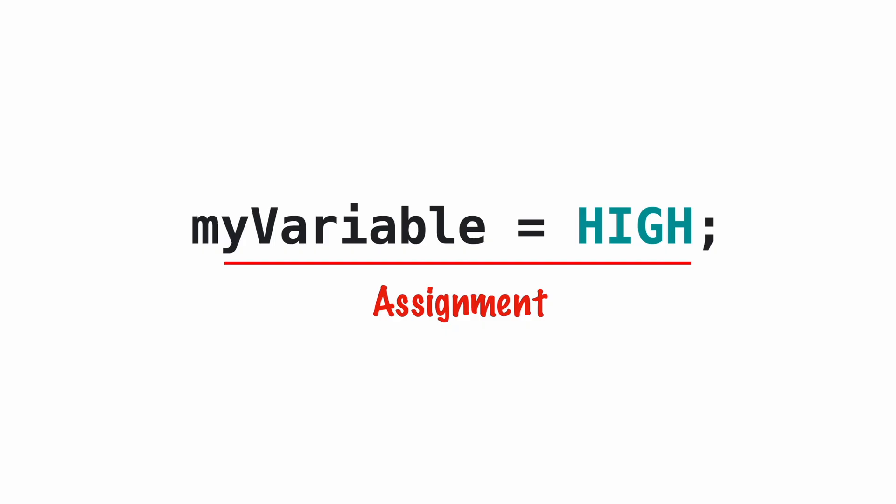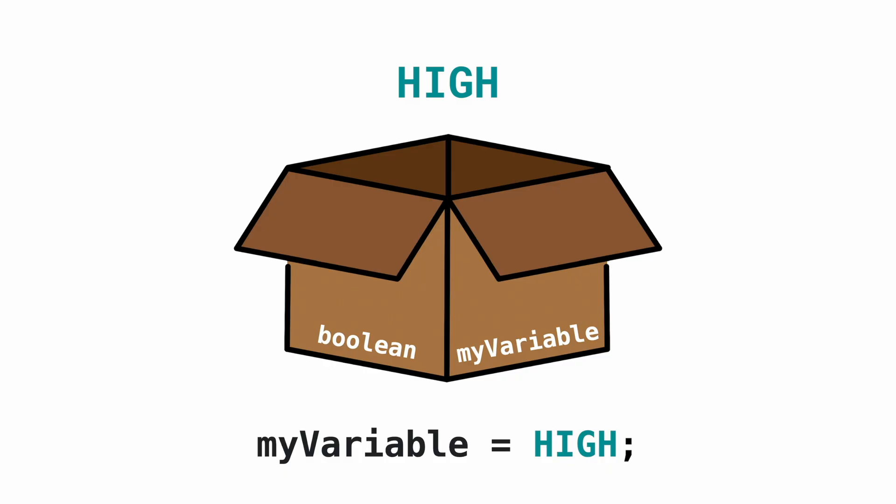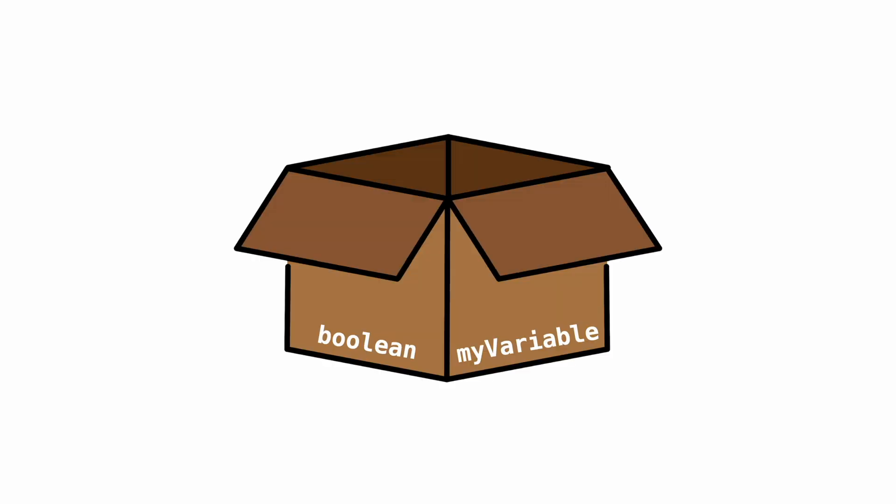As soon as we declared our variable, we can assign a value to it. In this case, 'myVariable = HIGH;' — what it does is it searches its memory for this box. So the memory is like the storage room. It searches the storage room, grabs out the box with the name myVariable, and puts in HIGH. If we ask Arduino at a later stage what is myVariable, it will grab the box from the storage room, open it up, and tell you what's inside.